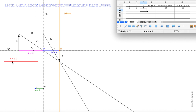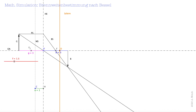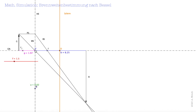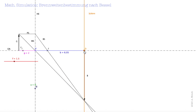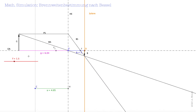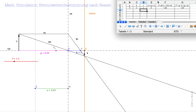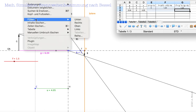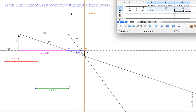Ich verstelle jetzt die Brennweite auf 1,5. Dann verändere ich die Position der Linse, sodass man ein gutes Bild hat. Den Bildschirm schieben wir dahin, wo ich ein scharfes Bild kriege. Jetzt verschiebe ich die Linse so lange nach rechts, bis ich ein scharfes Bild bekomme, und trage für G, B und U die Werte in das Tabellenkalkulationsprogramm ein: G=6,04, B=2, U=4,05. Wir lassen berechnen und haben die Brennweite 1,5 ermittelt.